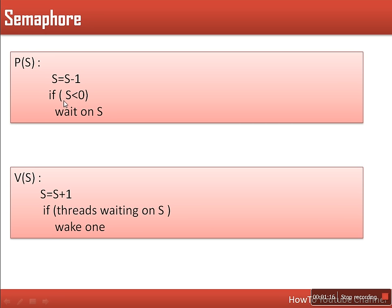How can this waiting be achieved? One way is with a while loop using this condition, so the while loop keeps running — that will be a busy waiting. The V operation increases the value of S, and if it finds that there are some threads waiting for semaphore S, it will wake one of them.